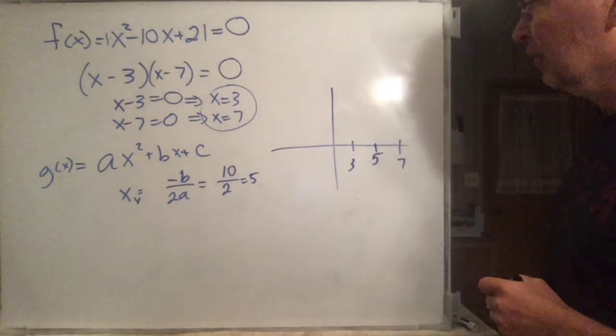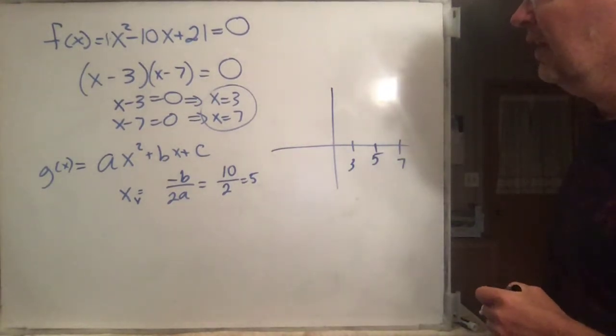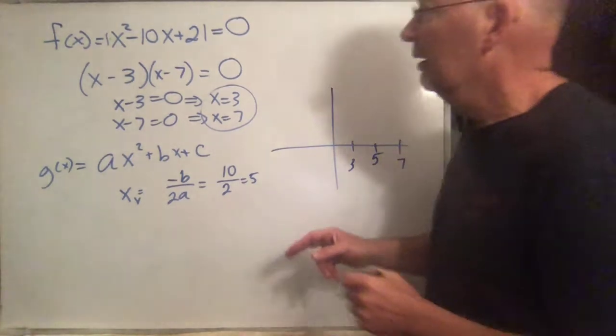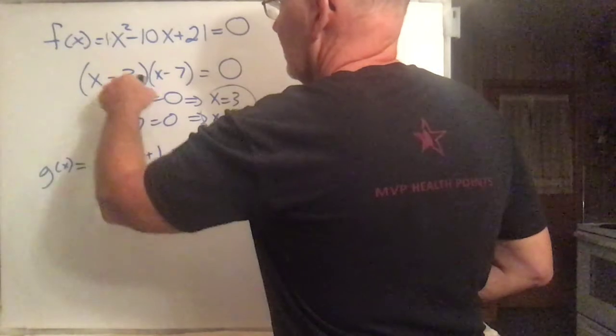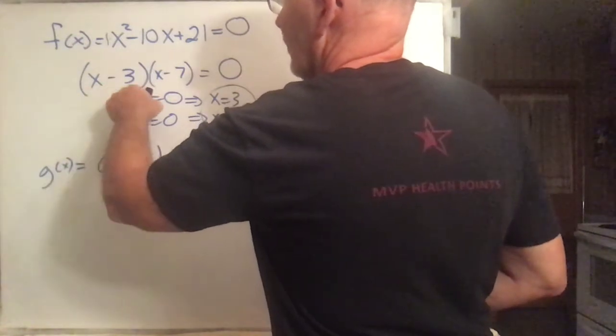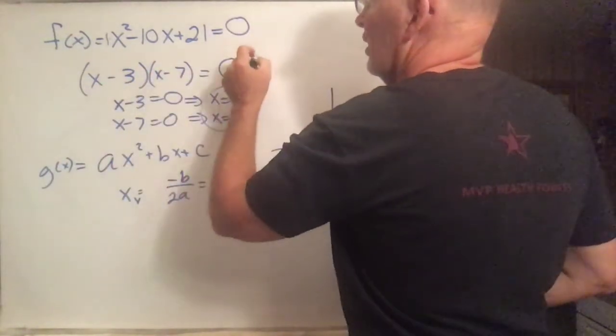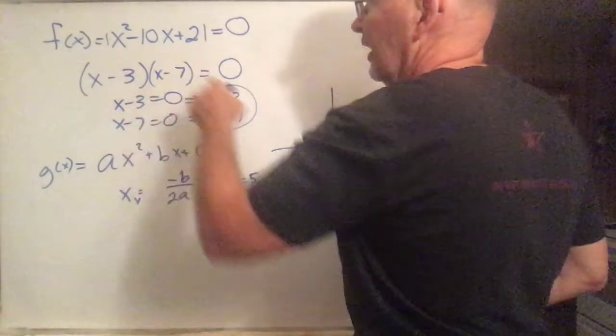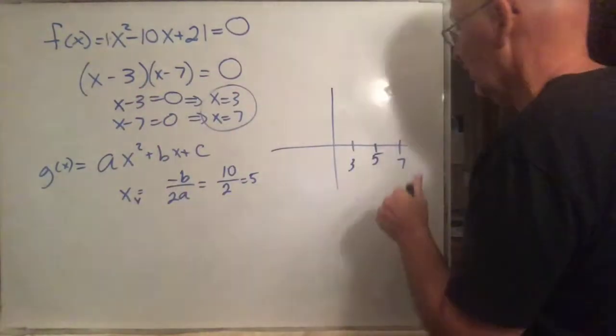So that gives you the x-coordinate. Once you have the x-coordinate, then to find the y-coordinate, you just stick 5 in here. You can stick it in either form. 5 minus 3 is 2, 5 minus 7 is negative 2, 2 times negative 2 is negative 4.